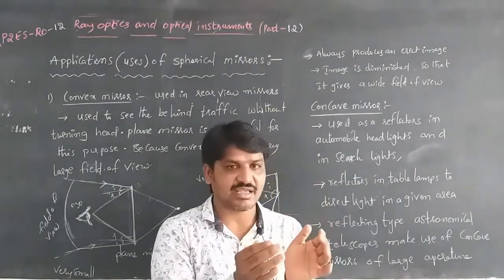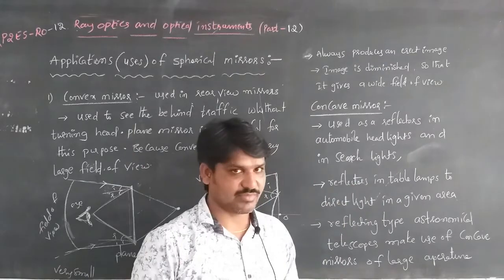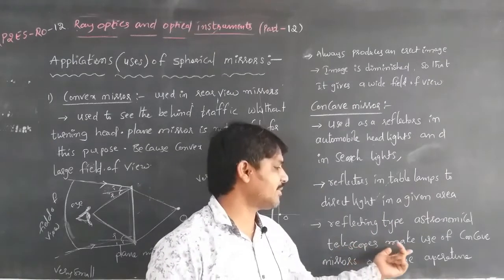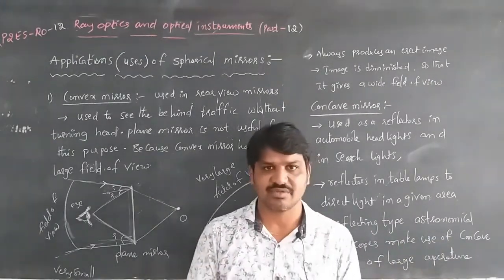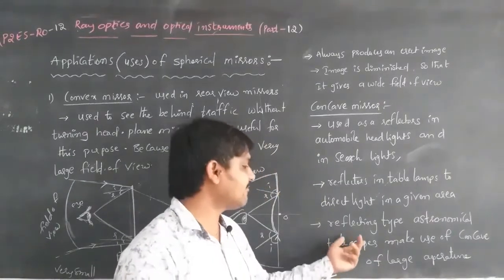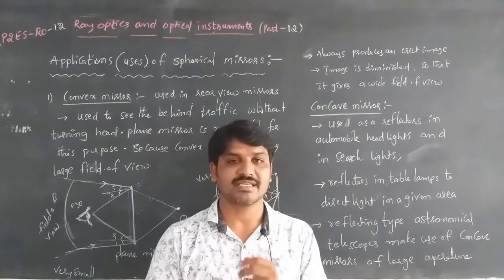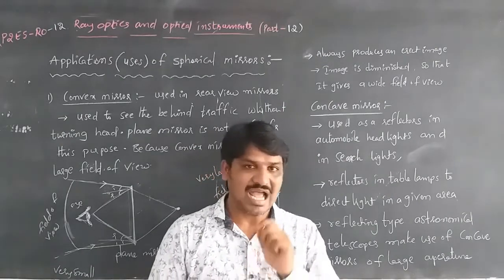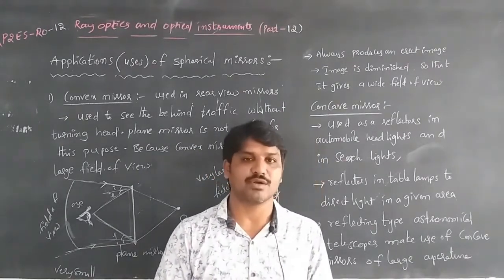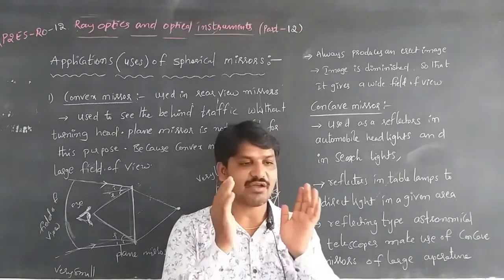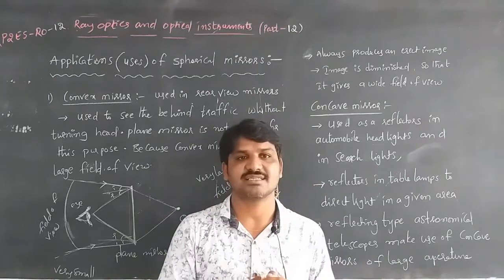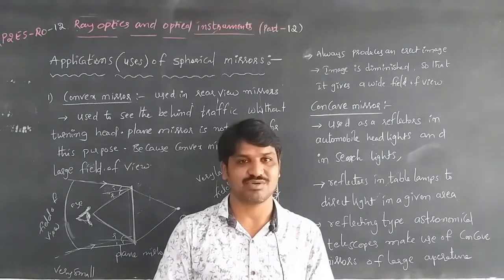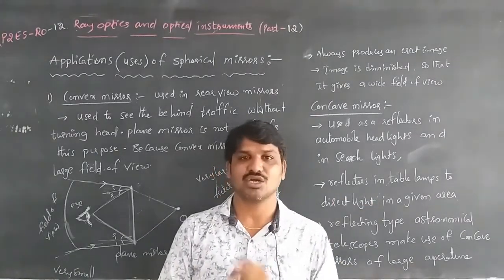Concave mirrors are used to focus light at a particular area and direct light in a given direction. Reflecting type astronomical telescopes make use of concave mirrors of a large aperture. Ophthalmoscopes — also called funduscopes — use concave mirrors to direct a parallel beam of light for physical examination of the eye retina.